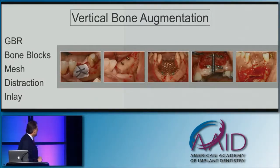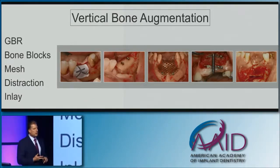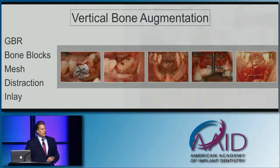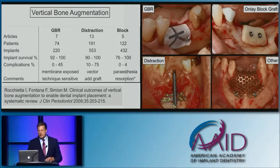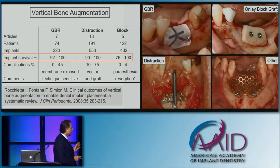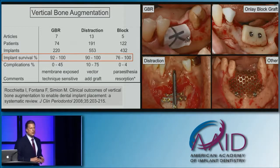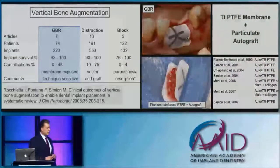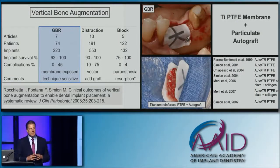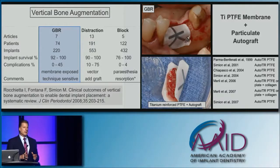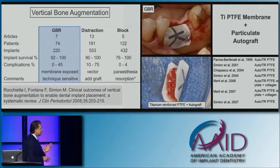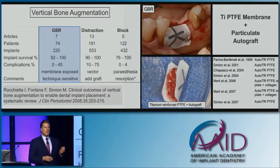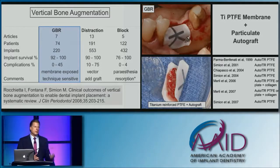For vertical bone augmentation, there are essentially five approaches: GBR, blocks, mesh, distraction, or inlay grafts. A systematic review shows implant survival rates are generally high, except for the block graft group at 76–100%. There is a high rate of complications with vertical bone augmentation, even with experienced clinicians. It's also important to note that in vertical GBR studies, there is a consistent pattern in the literature: clinicians use titanium-reinforced PTFE membranes with particulate autograft as part of the technique — not bone substitutes — to obtain these reported volume gains.